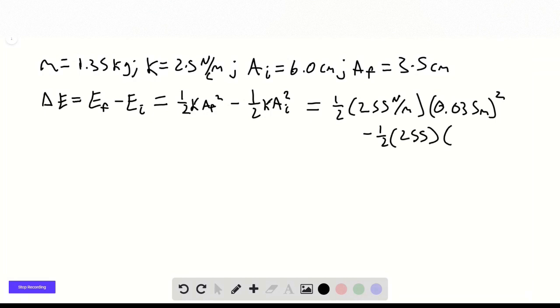255, 0.06 meters squared. And we get an energy change of 0.3 joules. So we've lost 0.3 joules, that's why it's negative here.